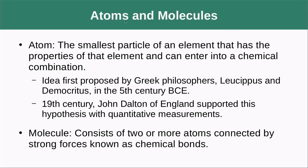All of the matter we've been talking about is made out of atoms and molecules. Atoms are the smallest particles of an element that have the properties of that element and can enter into a chemical combination. This idea goes all the way back to early Greek philosophers like Leucippus and Democritus in the fifth century BC. In the 19th century, John Dalton of England supported the hypothesis that atoms exist with quantitative measurements. Molecules consist of two or more atoms connected by strong forces known as chemical bonds — molecules make up compounds.